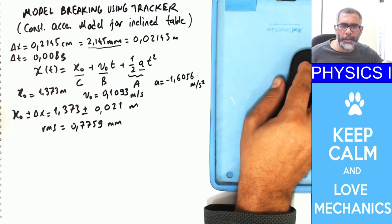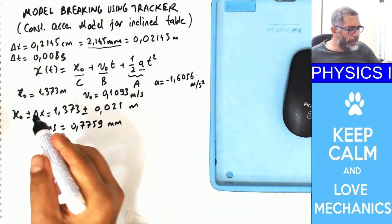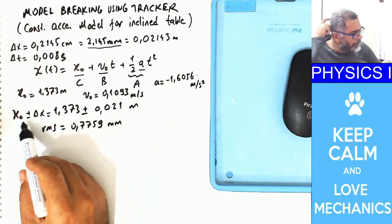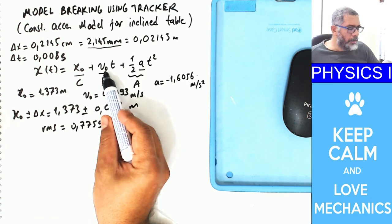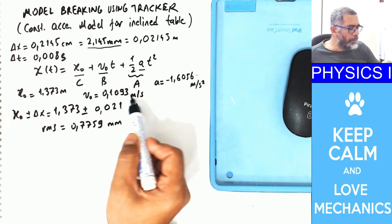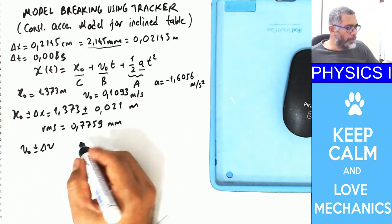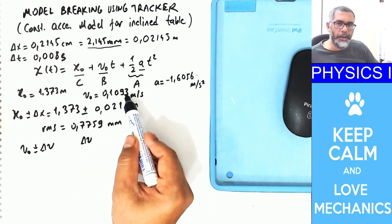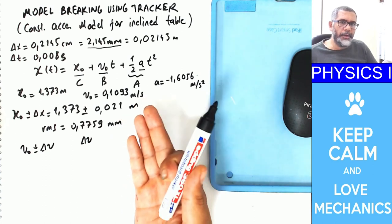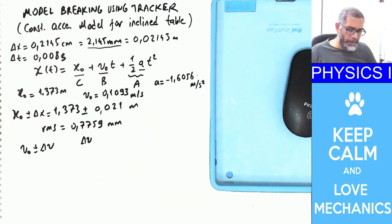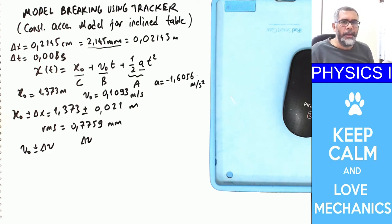Next, I will continue to determine the errors in the parameters — we already have the position. The next thing is that Tracker has calculated the initial velocity, but what about its error? V₀ ± ΔV: what is ΔV? In physics, we don't only have errors in measurements, but also calculated errors in our results. If there are errors in measurements, there must be errors in results. So what is ΔV, and how do we get that information?